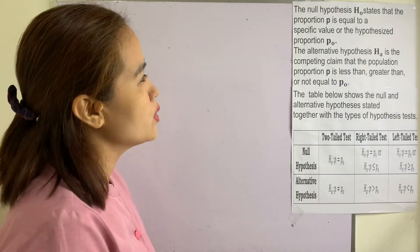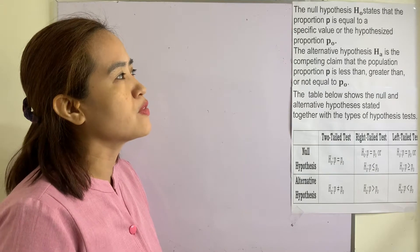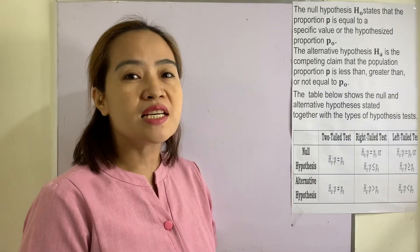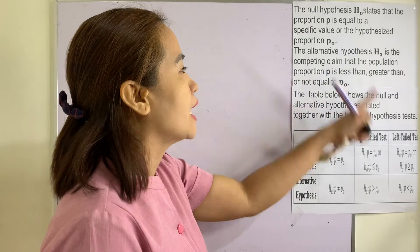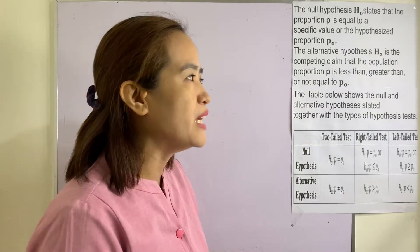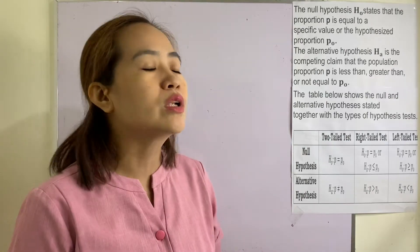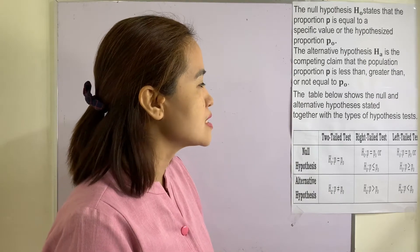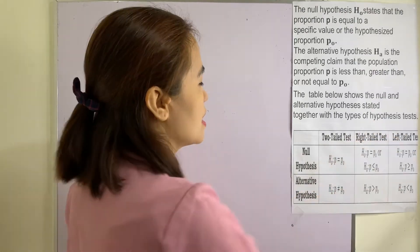Hello everyone, welcome back to my channel. Our most essential learning competency in this session is to formulate the appropriate null and alternative hypothesis on a population proportion. The null hypothesis H₀ states that the proportion p is equal to a specific value, or the hypothesized proportion p₀. The alternative hypothesis Hₐ is the competing claim that the population proportion p is less than, greater than, or not equal to p₀.